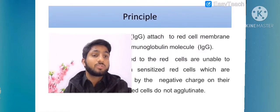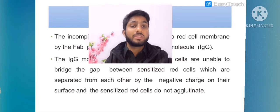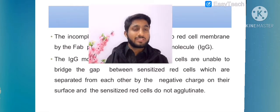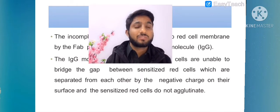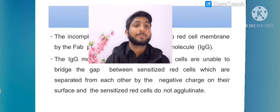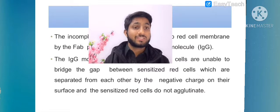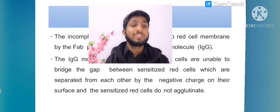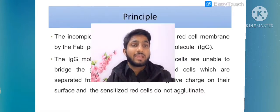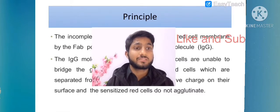The IgG molecules attached to the red cells are unable to bridge the gaps between sensitized red cells. When IgG molecules bind, agglutination doesn't occur because of the negative charge on the red cells. We need to add anti-human globulin protein to make agglutination possible.